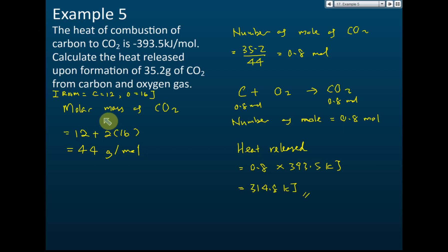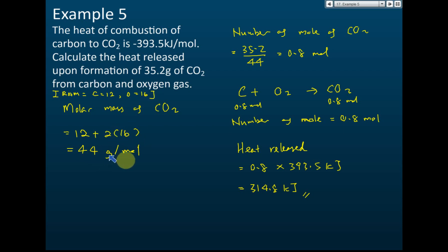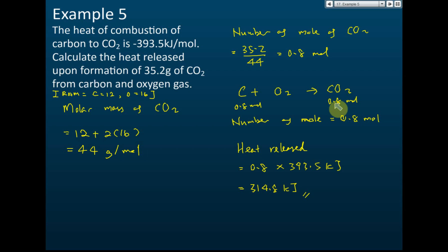The final answer is 314.8 kJ. First, we find the molar mass of CO₂: one carbon plus two oxygens = 12 + 2 × 16 = 44 g/mol. Then, number of moles of CO₂ = mass / 44 = 0.8 mol. Since one carbon produces one CO₂ (1:1 ratio), moles of carbon = 0.8 mol. Heat released = 0.8 × 393.5 = 314.8 kJ.